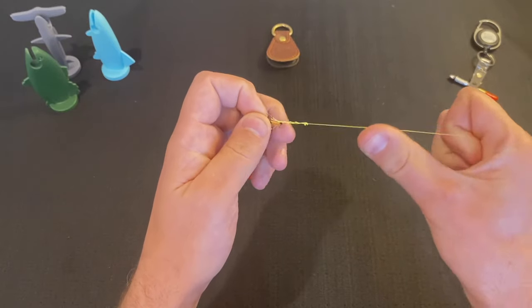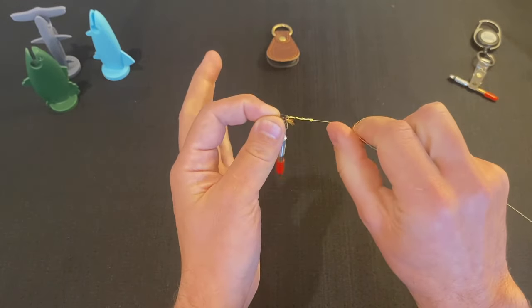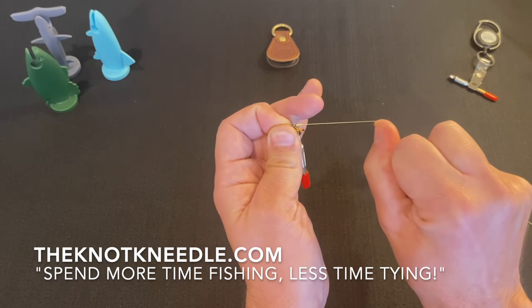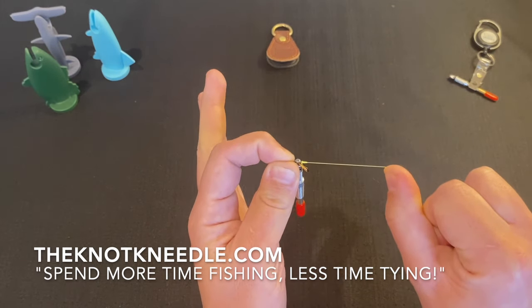This is where I'm going to wet my knot and then pull the fly and the line in separate directions until the clinch knot cinches down.